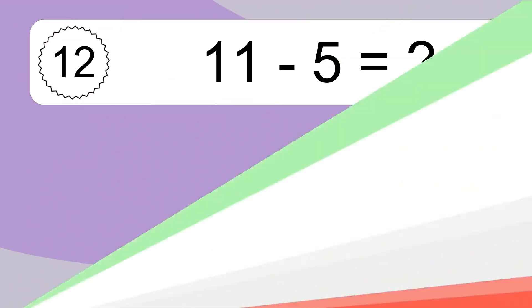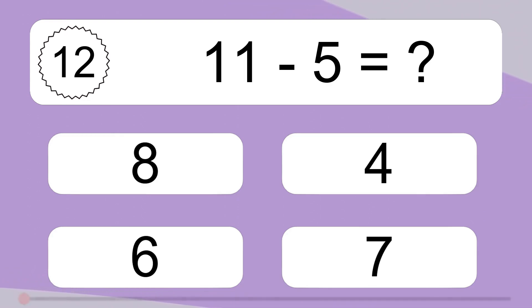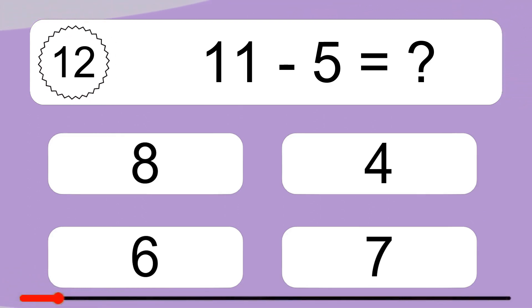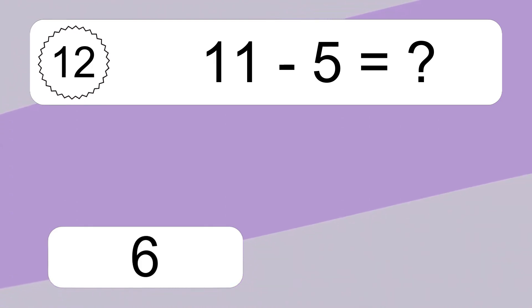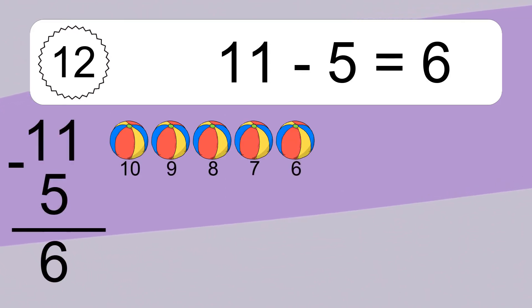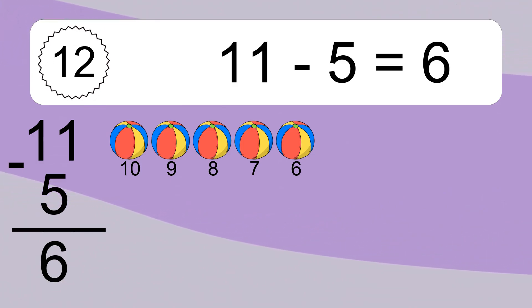11 minus 5 equals what? 11 minus 5 equals 6. Let's count it: 10, 9, 8, 7, 6.